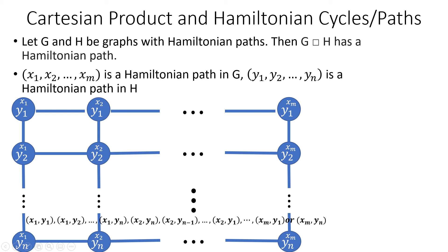Another way to see the existence of the Hamiltonian path in this product is to write one out. The path x sub 1, y sub 1; x sub 1, y sub 2; and so on up to x sub 1, y sub n; then x sub 2, y sub n; x sub 2, y sub n minus 1; and so on down to x sub 2, y sub 1; continuing this way all the way to x sub m, y sub 1 if m is odd, or x sub m, y sub n if m is even, is the Hamiltonian path in our product graph. Each consecutive pair of vertices is adjacent by one of our two adjacency conditions, and it does exhaust the vertices of our graph.